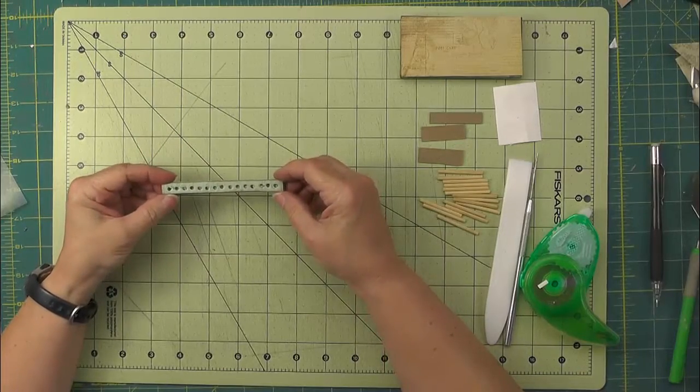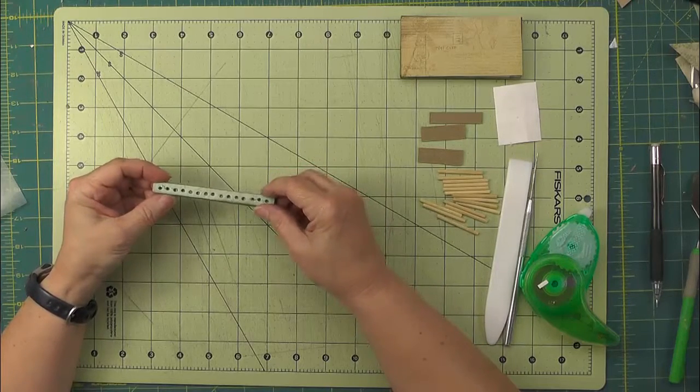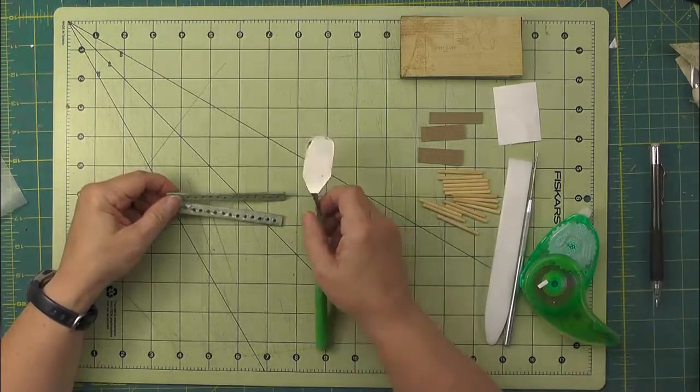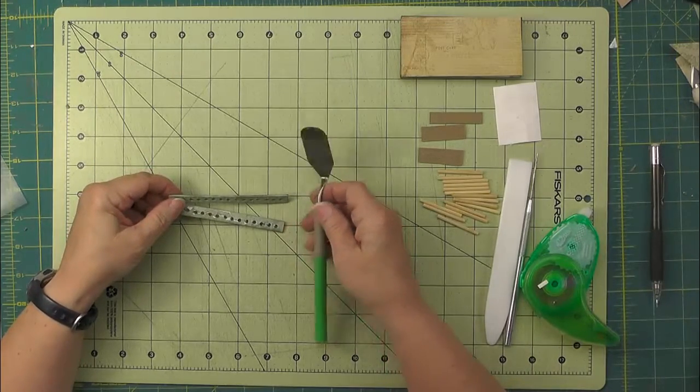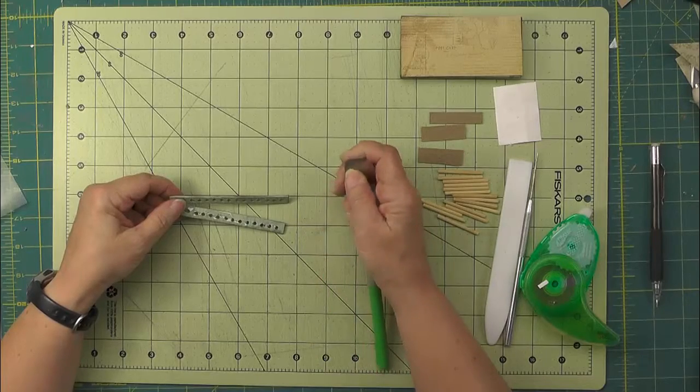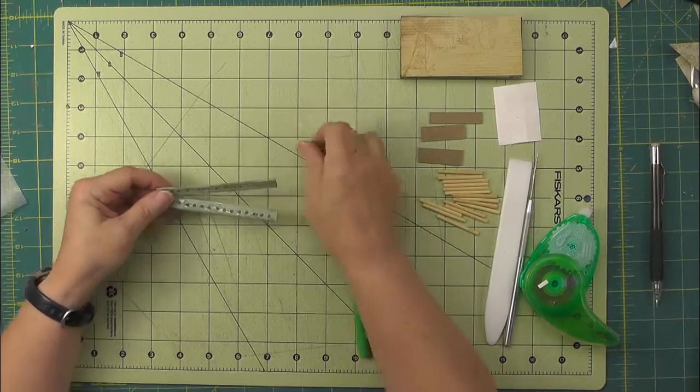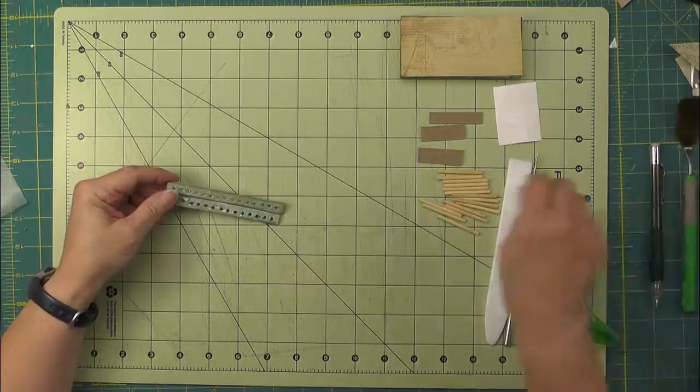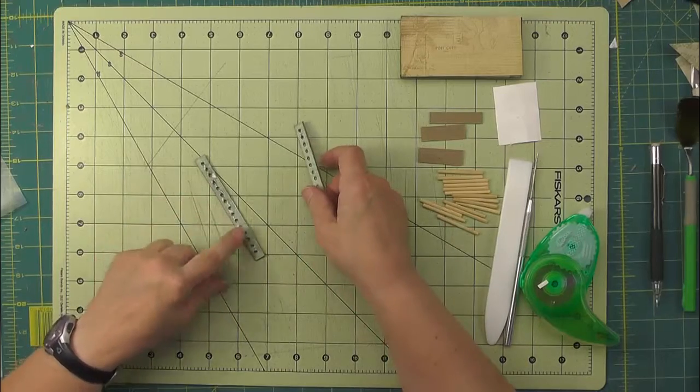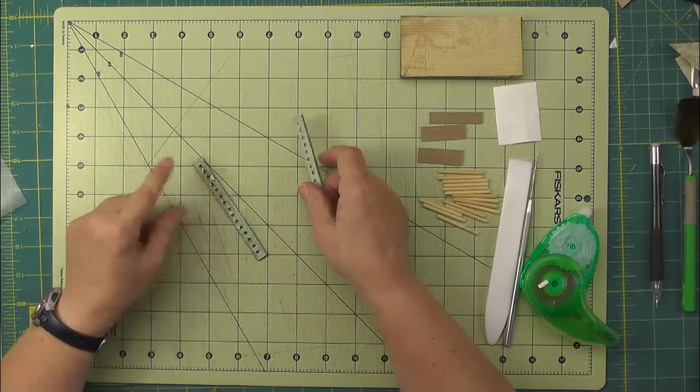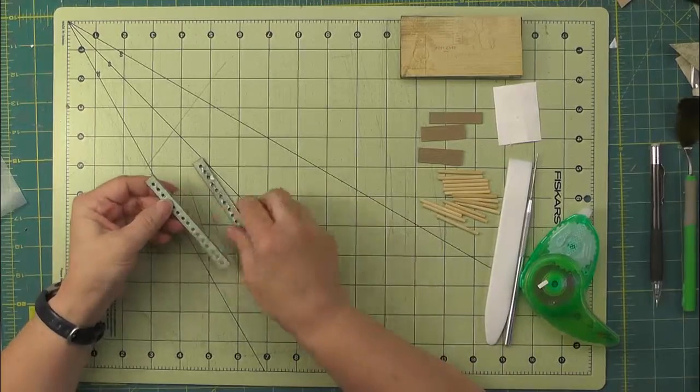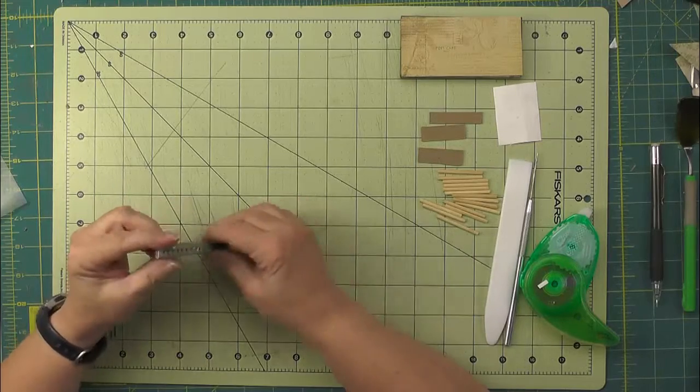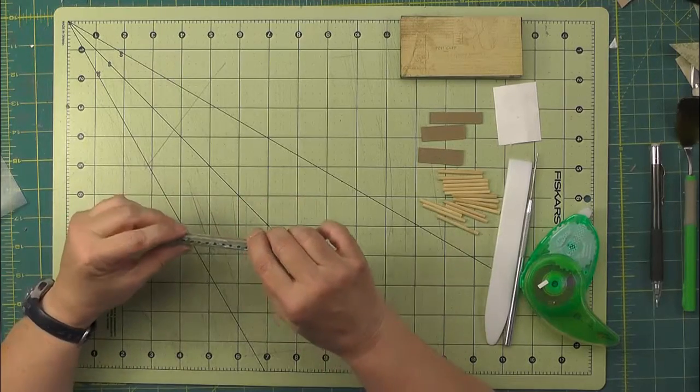So once you're finished punching all of your holes, pull the pieces apart gently. And I don't have a Cricut machine, but this little spatula that they sell to go with the Cricut machine is really a handy tool for all sorts of things. Anyway, that's what I use to pull mine apart. And you probably can see that one of my insides doesn't look very nice, but I'm not worried because what I'll do is just flip that to the outside and I'm just making sure that I still have all of my holes oriented in the same direction.